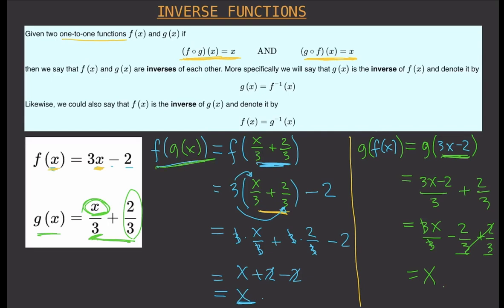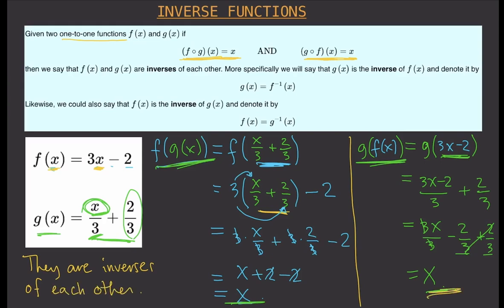As you can see, f(g(x)) = x and g(f(x)) = x, and therefore we say that they are inverses of each other. Otherwise, if you don't get x as your final answer for both composite functions, that means the functions you're comparing are not inverses of each other.